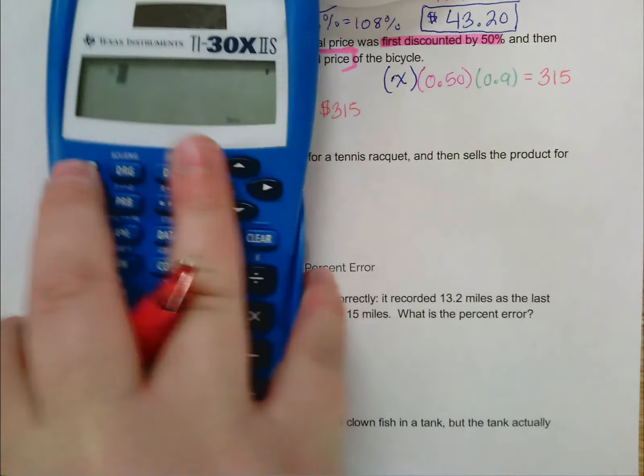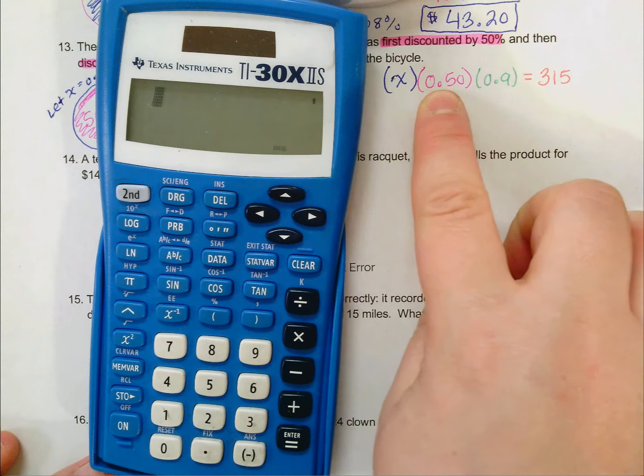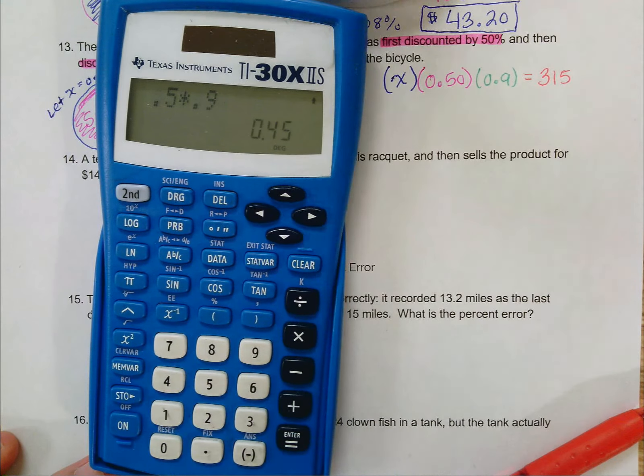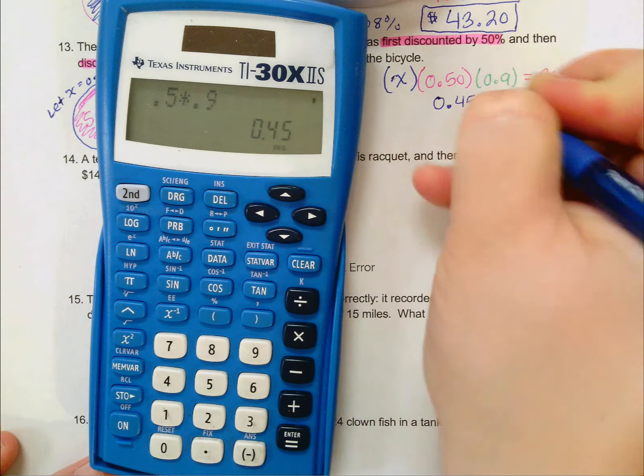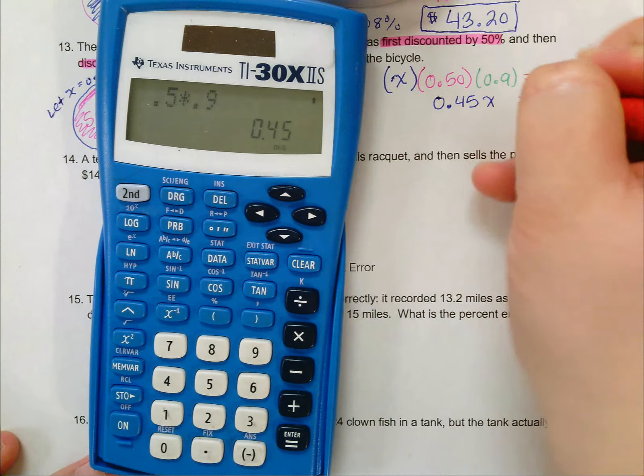So using this information, I should be able to find my original amount. To solve this equation, what I'll need to do is first take 0.5 times 0.9. Shouldn't need a calculator actually to tell you that. That's going to give you 0.45, 0.45 times X, and that value is equal to 315.